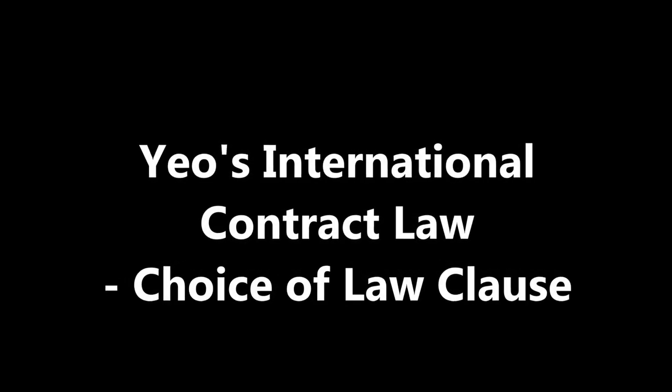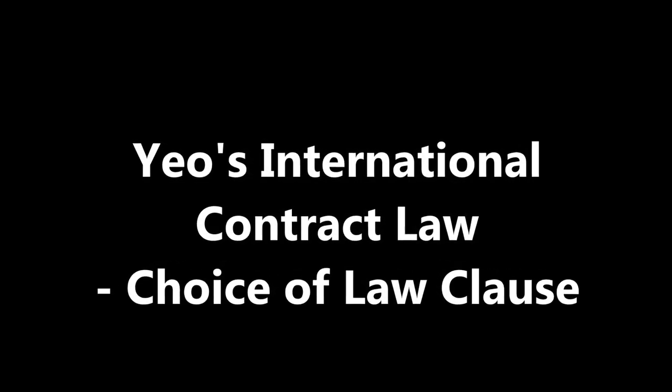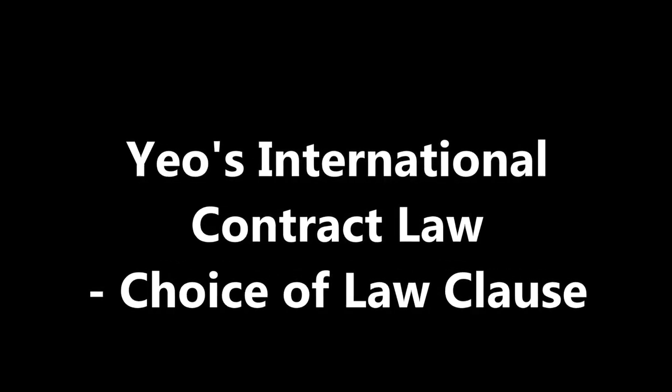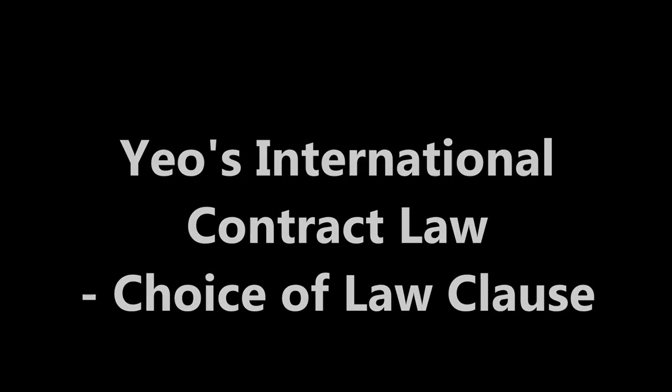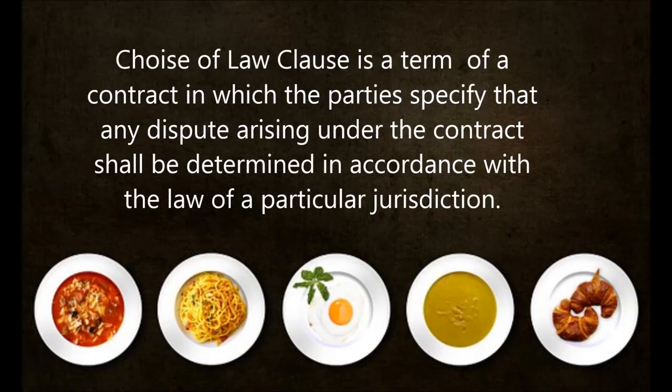International Contract Law: Choice of Law Clauses. A Choice of Law clause is a term of a contract in which the parties specify that any disputes arising under the contract shall be determined in accordance with the law of a particular jurisdiction.